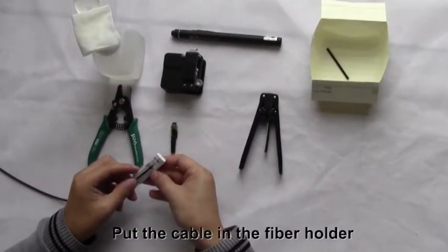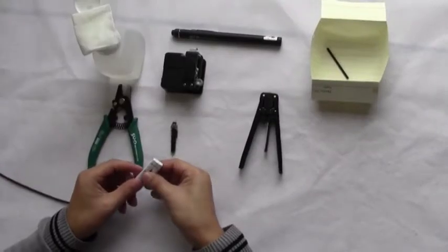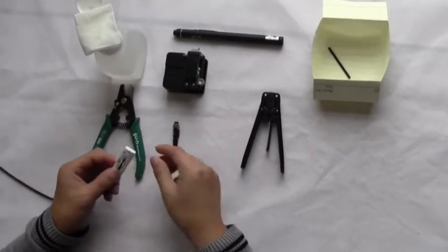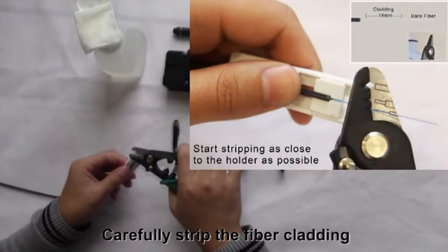Put the cable in the fiber holder. Carefully strip the fiber cladding.